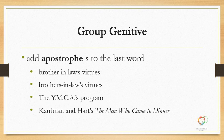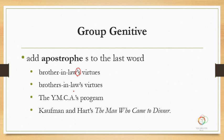Group genitive: add apostrophe S to the last word. So with compound nouns or hyphenated words — brother-in-law, for example — just put apostrophe S at the end. Brothers-in-law, you put an apostrophe S there. YMCA's program, and so on.